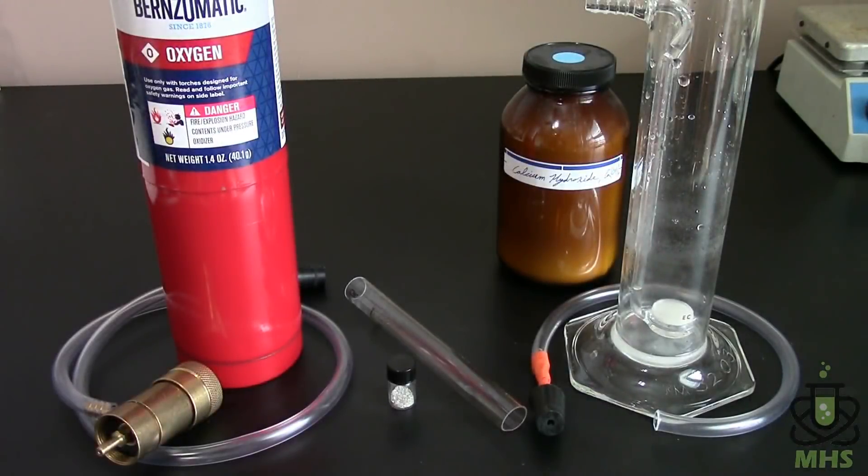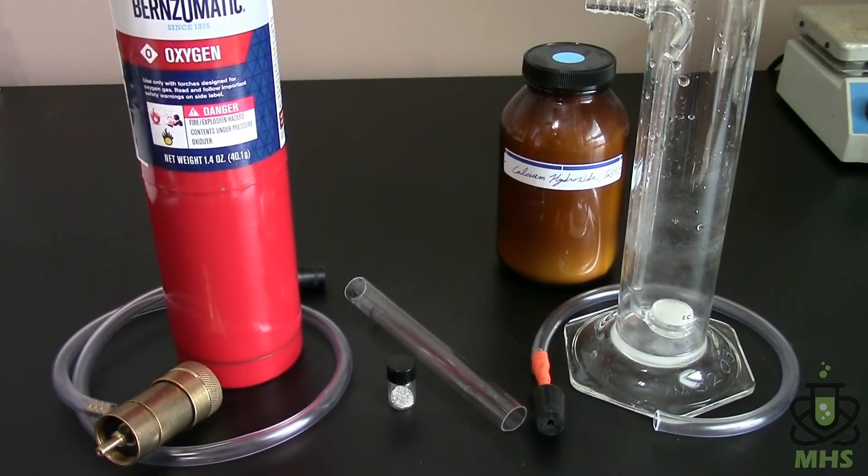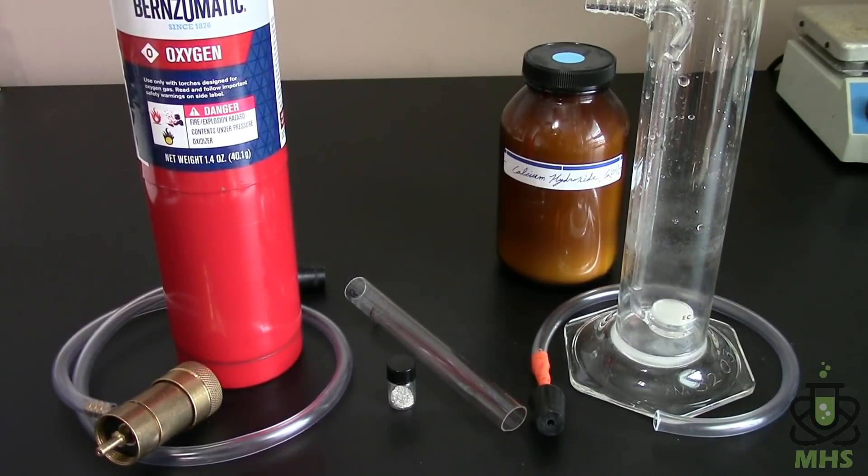So here are all the components of my apparatus and I wanted to spend a minute talking about each of the parts because some of them are fairly special. First is an oxygen cylinder that I got from Home Depot presumably for welding.